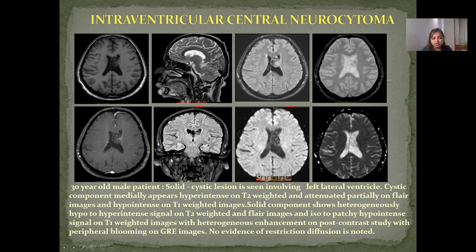Case 4 — Intraventricular Central Neurocytoma: 30-year-old male patient with a solid cystic lesion involving the left lateral ventricle. The cystic component appears hyperintense on T2-weighted images, partly attenuated on FLAIR, and hypointense on T1-weighted images. Solid components show heterogeneous hypo-to-hyperintense signal on T2 and FLAIR images and iso-to-mildly hypointense on T1-weighted images with heterogeneous enhancement on post-contrast and peripheral blooming on GRE. No diffusion restriction is noted.